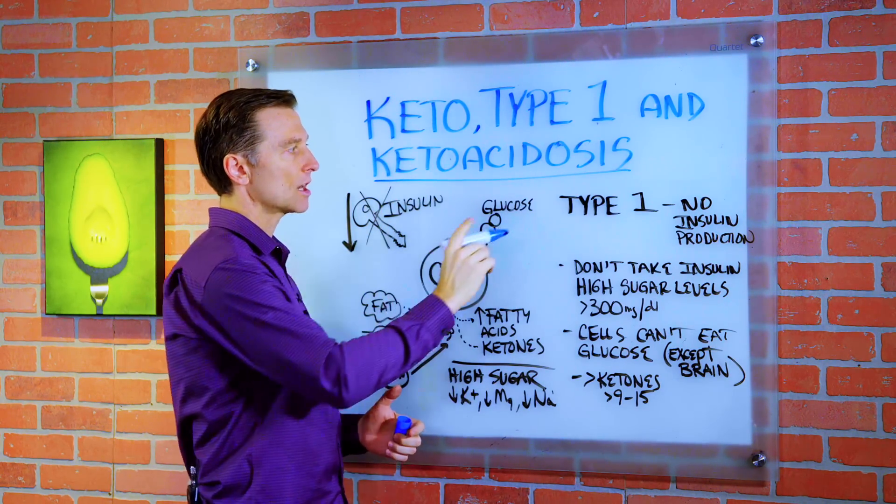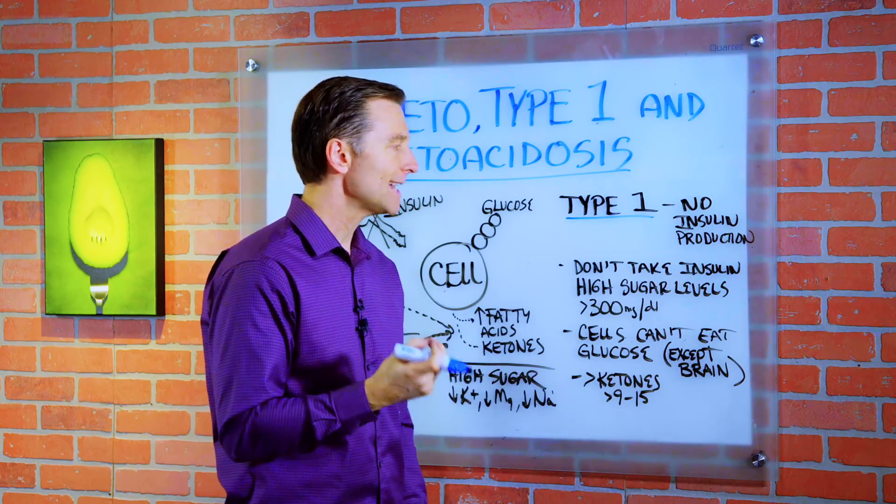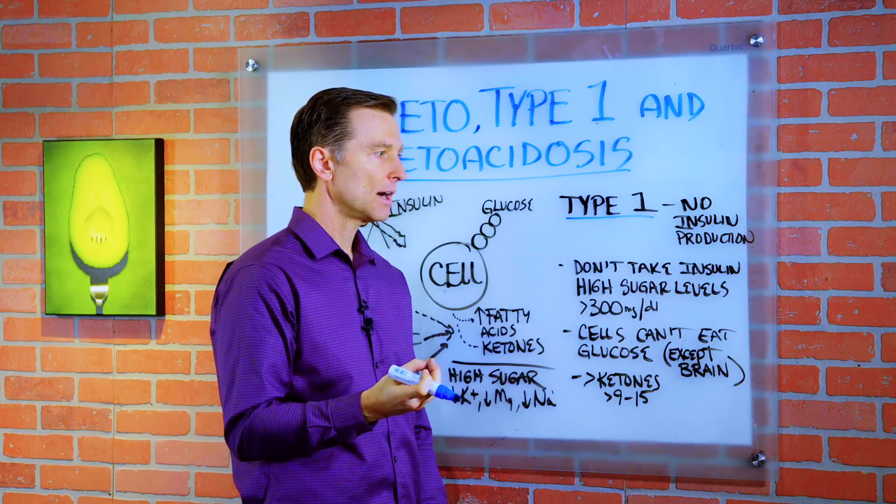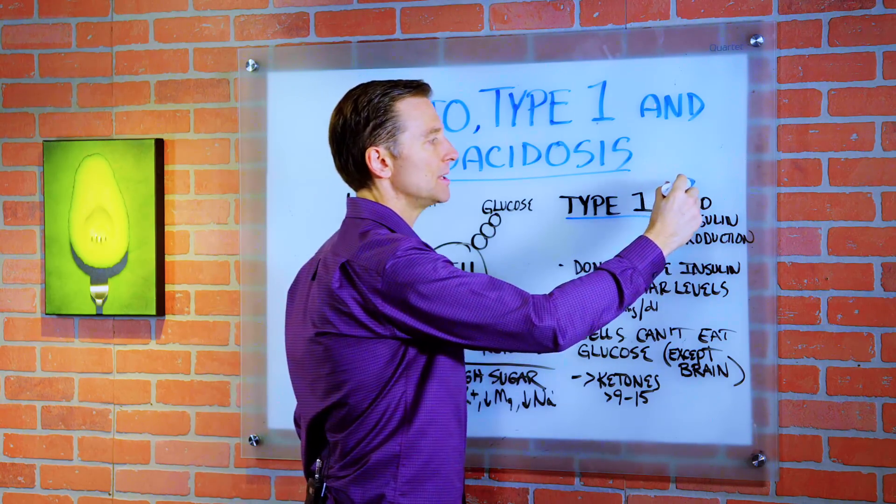So first thing, let's talk about what is a type 1. It's a situation where the cells that make insulin are dysfunctional. They're not making insulin anymore. So you have no insulin production. So you have to take insulin.